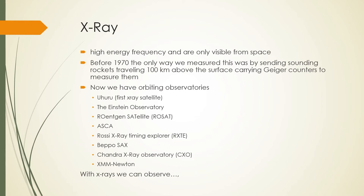X-rays are a high-energy frequency and are only visible from space. Before 1970, the only way scientists could measure X-rays was by sending sounding rockets traveling 100 kilometers above the surface carrying Geiger counters. Now we have orbiting observatories in space. Examples include the first X-ray satellite Uhuru, the Einstein Observatory, and the Roentgen Satellite (ROSAT), more commonly known as ASCA.